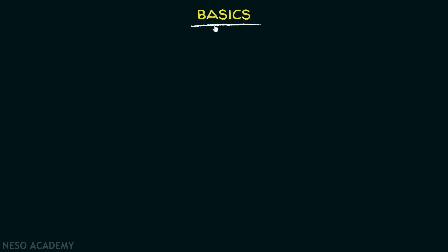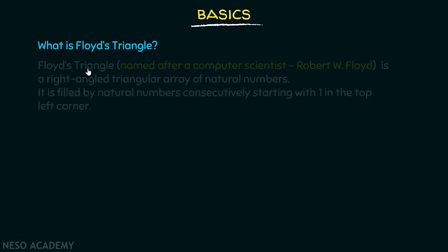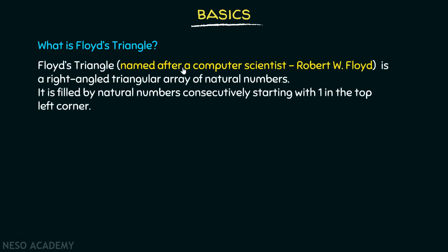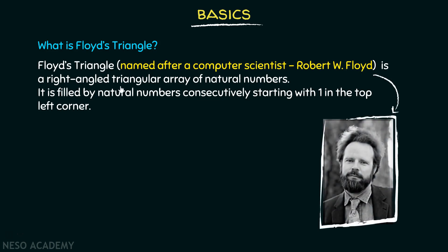First of all, let's consider some basics. What is Floyd's triangle? Floyd's triangle, named after computer scientist Robert W. Floyd, is a right-angled triangular array of natural numbers. It is filled by natural numbers consecutively, starting with one in the top left corner.